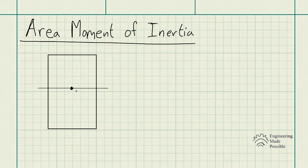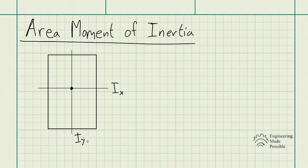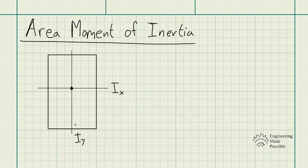Let's say we have a rectangular beam of this cross-section, with its centroid located here. We have the area moment of inertia with respect to the x-axis, which we'll call I-x, and the area moment of inertia with respect to the y-axis, which is I-y. Depending on the orientation of the beam and the external bending moment applied, you would use either I-x or I-y to solve for the stress developed within the material. For now, we'll just stick to solving for the area moment of inertia.